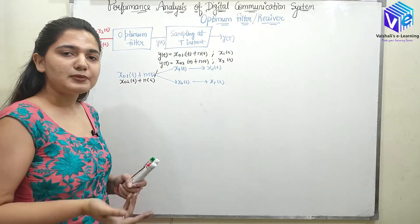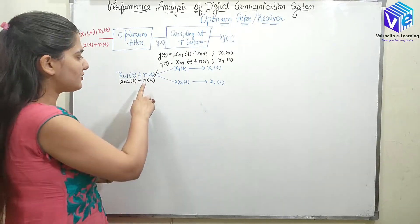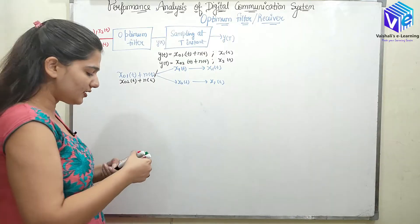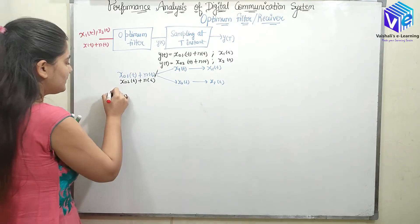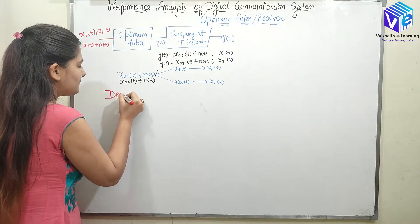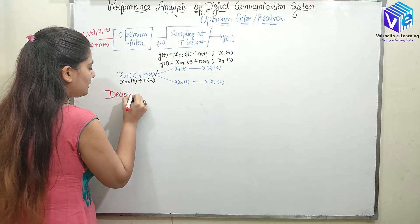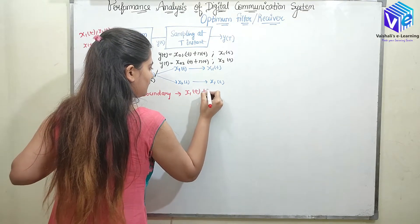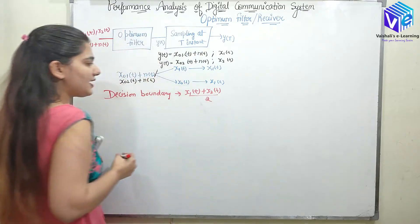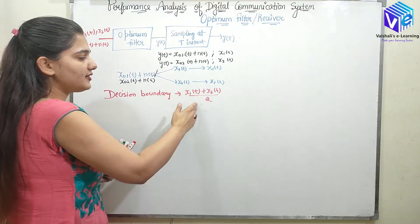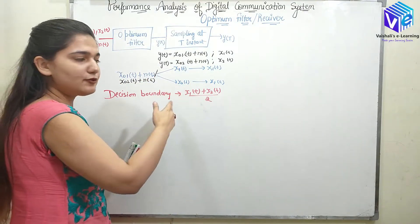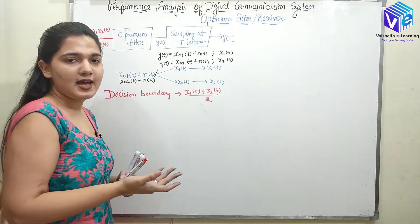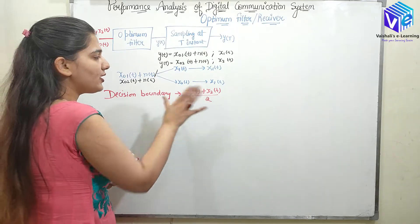When the amplitude of noise is much greater, errors will occur. The decision boundary in this case would be at (X1(T) + X2(T)) / 2. After this decision boundary, it will decide X2, and before this boundary it will decide X1.